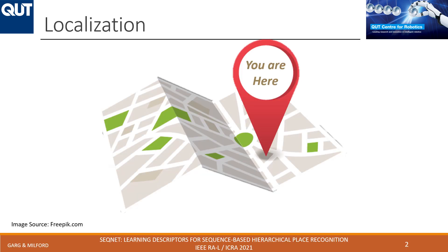This research is about visual localization, where we try to answer the question: where am I? Given a map of an environment, a robot has to find its location or orientation with respect to that given reference map. This is one of the key capabilities for a mobile robot so that it can then easily navigate.